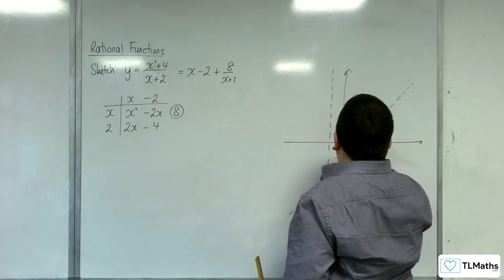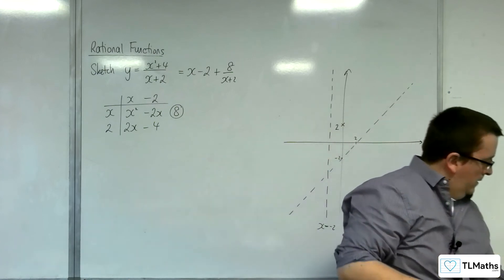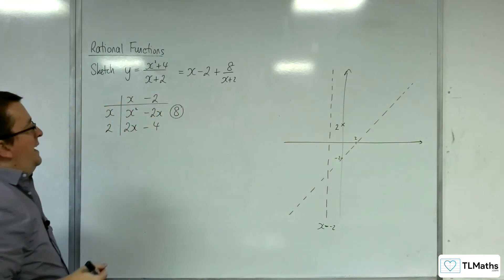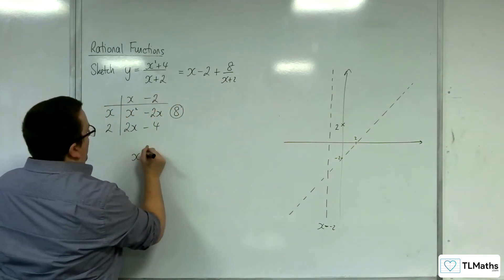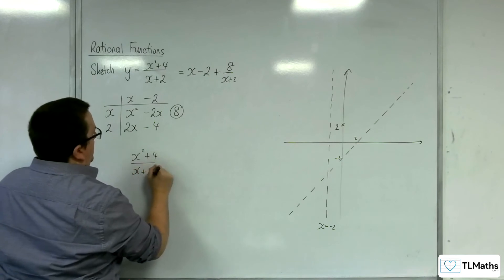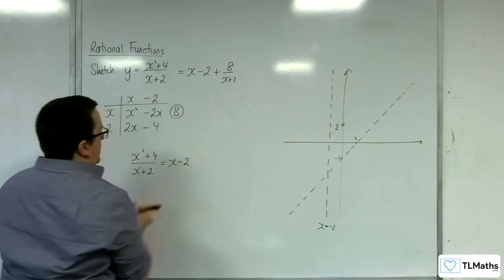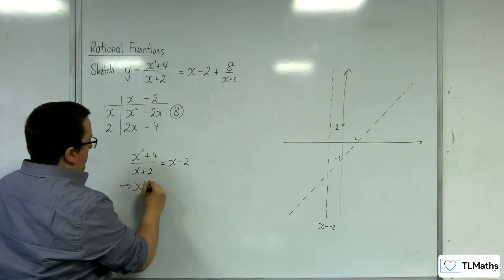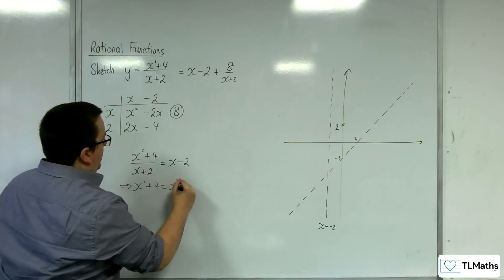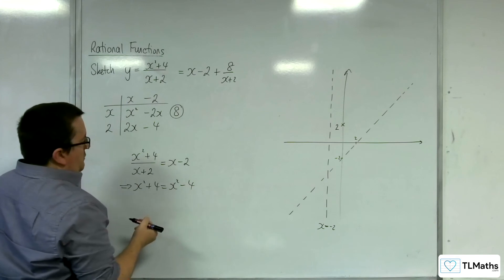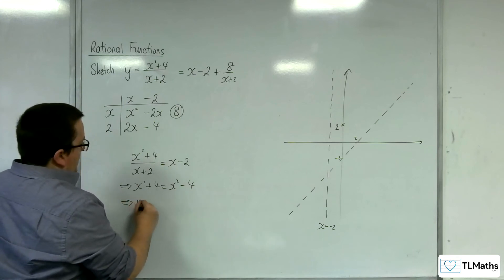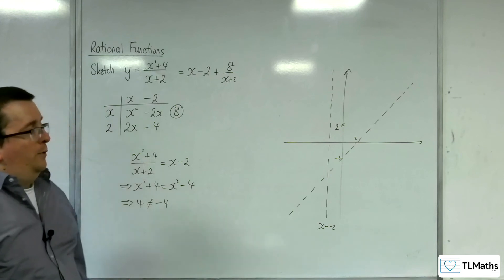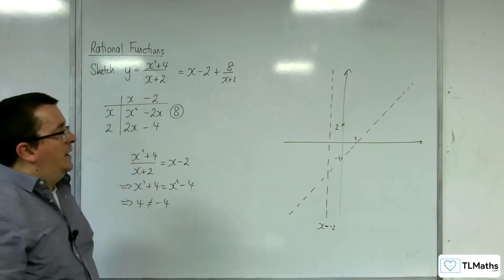So that's minus 2, and that'll be 2. Now does the curve cross the oblique asymptote? So we're going to put x squared plus 4 over x plus 2 equal to x take away 2. Multiplying up by the x plus 2, we get x squared plus 4 must be equal to x squared take away 4, difference of two squares, and so that would mean that 4 would have to be equal to minus 4, which it clearly isn't, and so the curve does not cross that oblique asymptote.